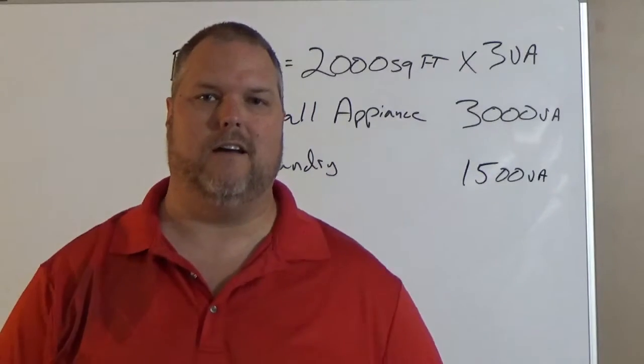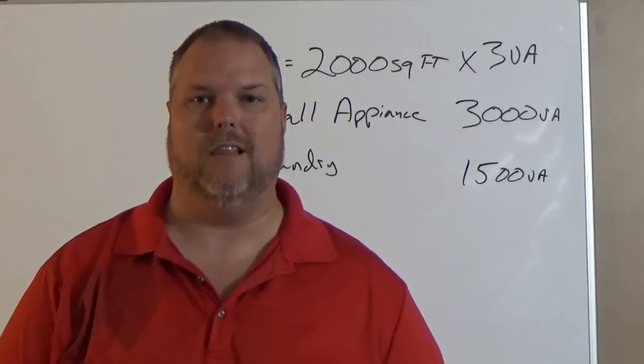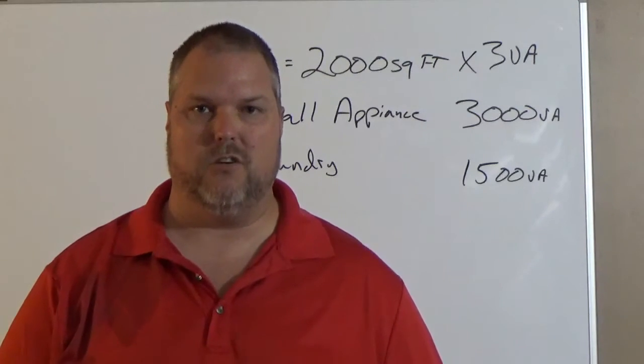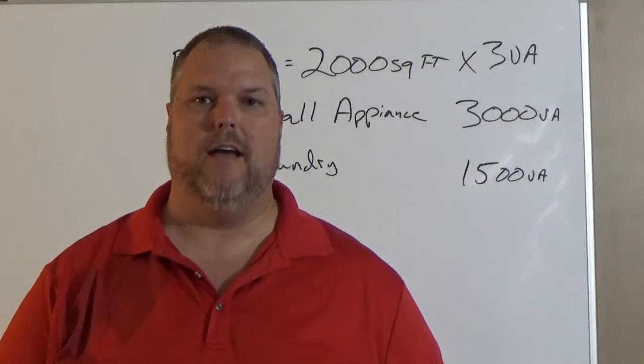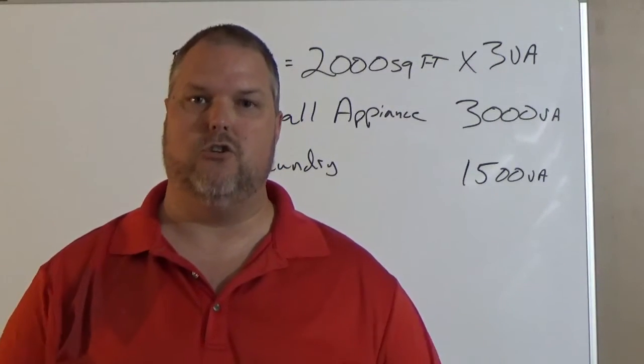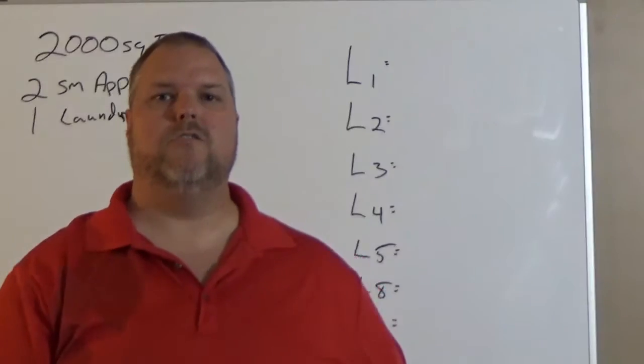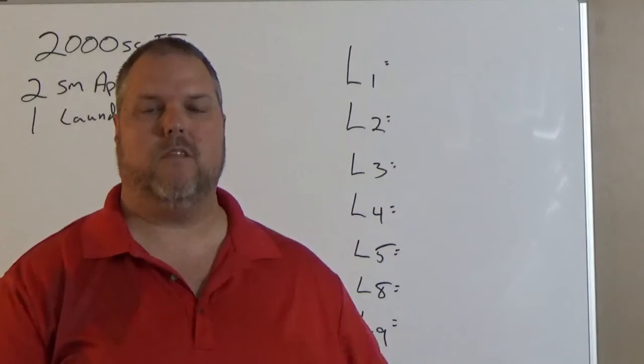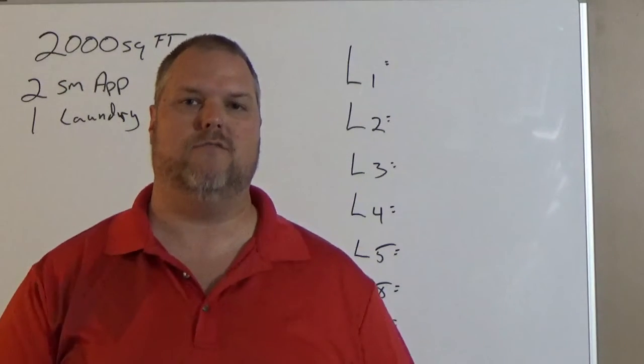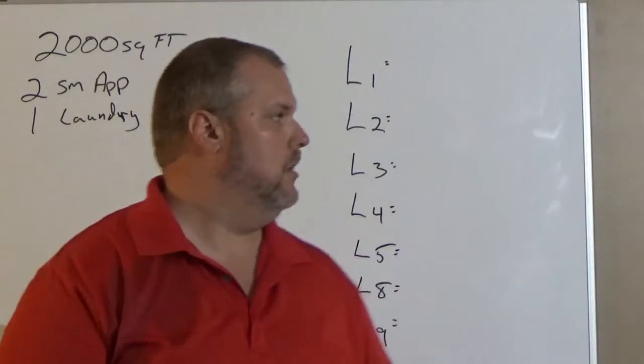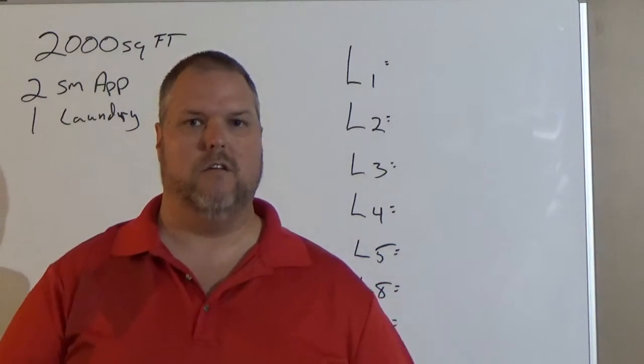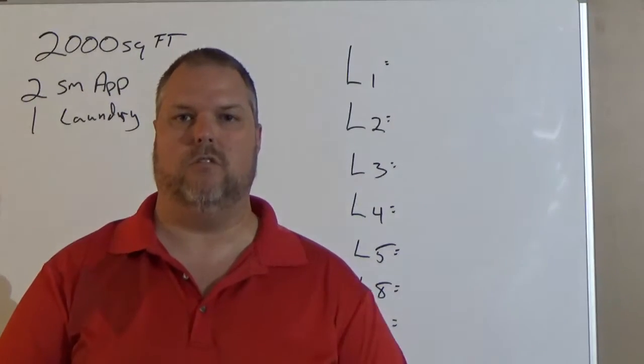I like to use what's called the line method. I found this out of a book many years ago when I started teaching this. I basically broke it down into certain lines and it gives information so you know what's what. So we're going to break it down by line. We're going to start with line 1, work ourselves all the way to line 9. Line 1 through 9 is going to find our total general lighting load.